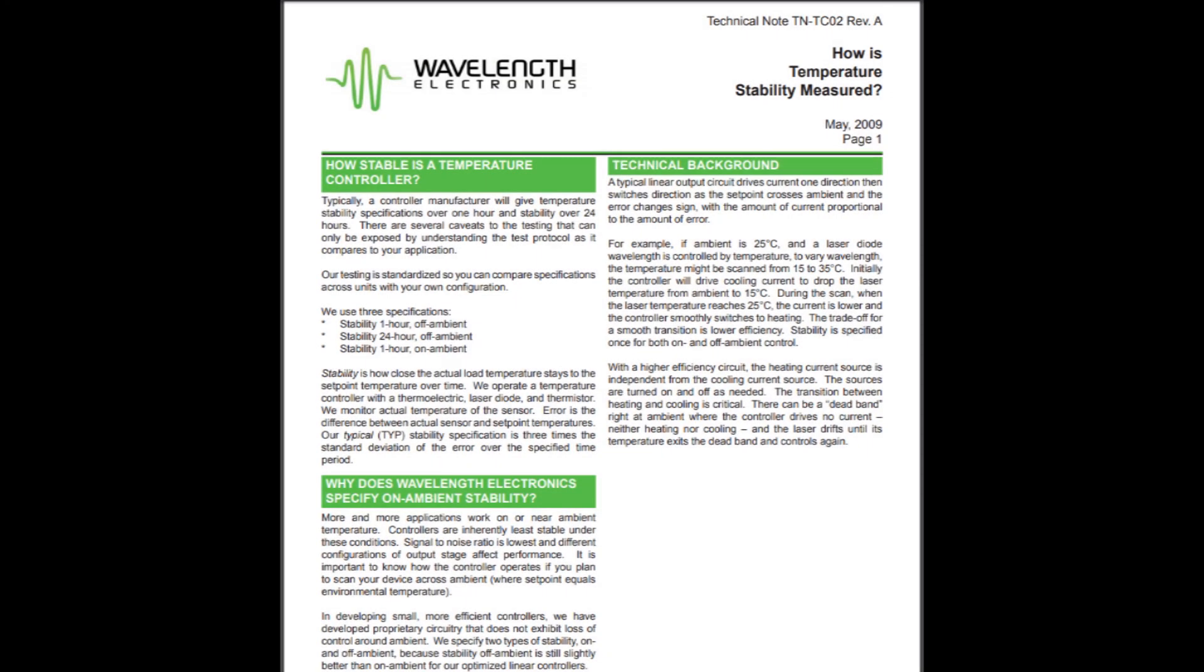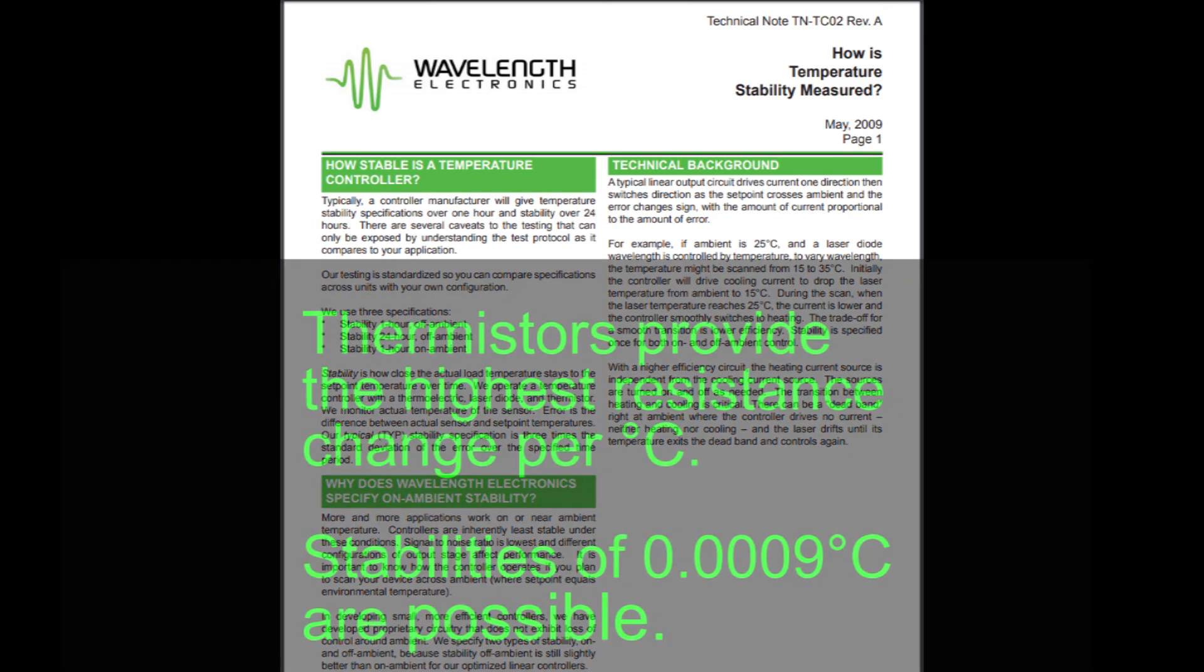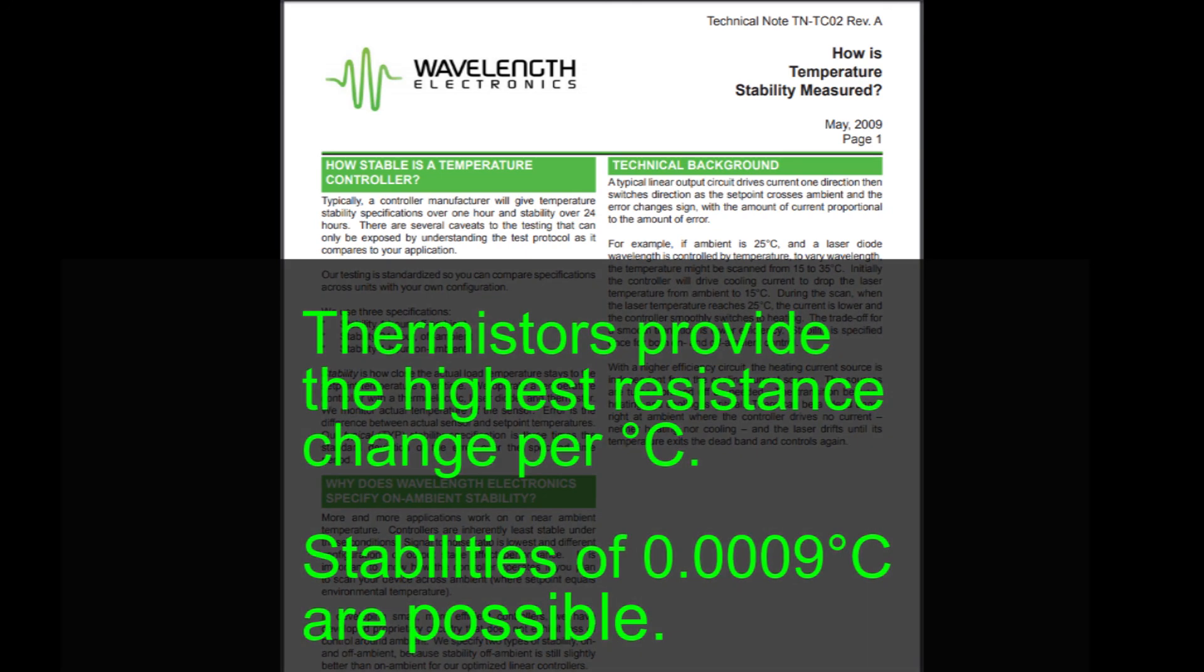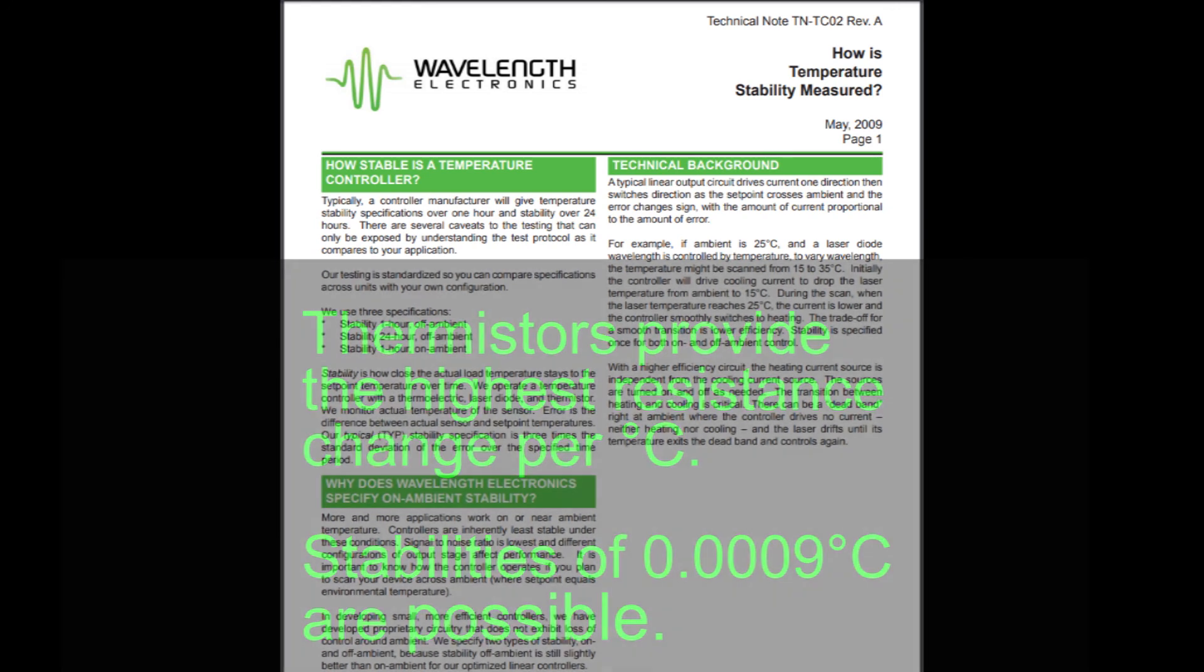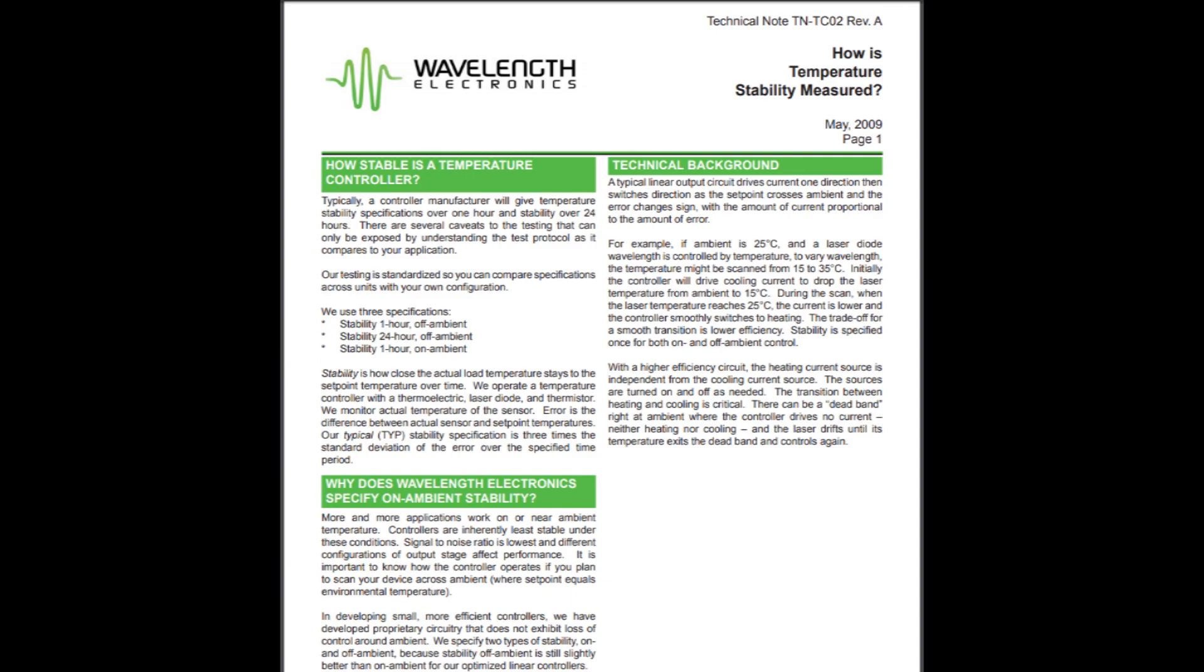For a temperature controller, system stability is a critical specification. Wavelength tests using thermistors because they offer the highest resistance change per degree C. Stabilities can be as low as 0.0009 degrees C. Tech note TNTCO2 describing the testing is available.